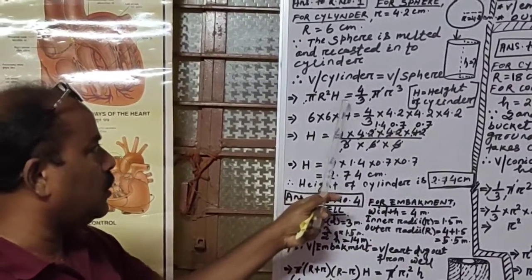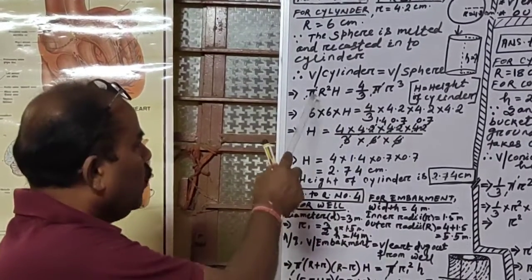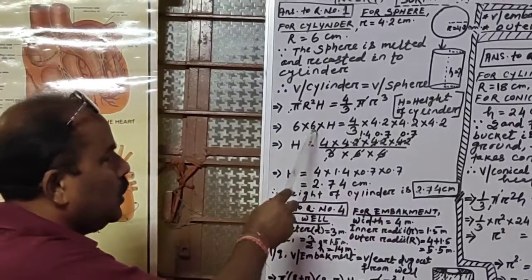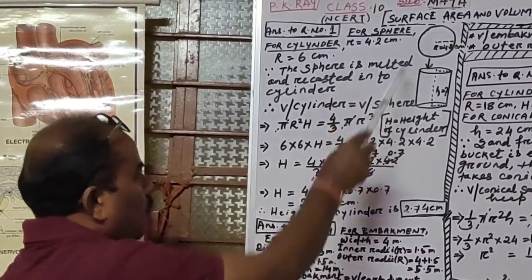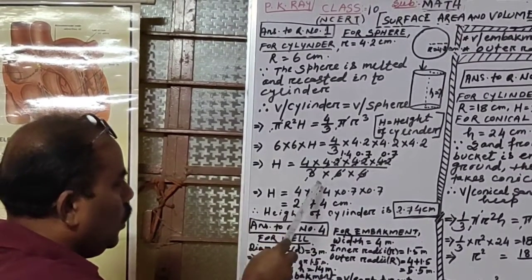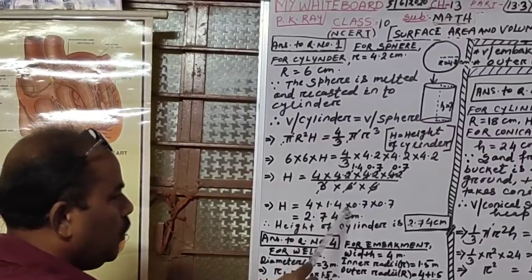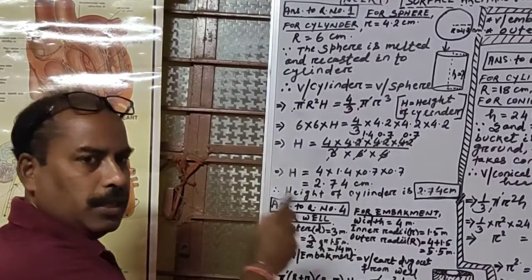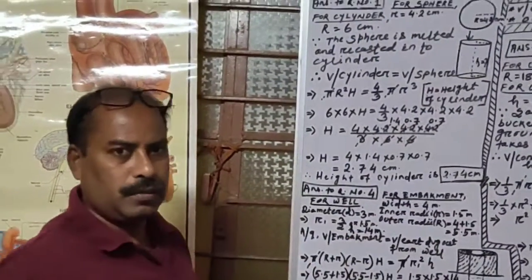We put in the formula: πR²h = 4/3 πr³. The π cancels from both sides. Then 6 × 6 × h = 4/3 × 4.2 × 4.2 × 4.2. Keeping h on the left, the other values divide to the right side. After solving, h = 4 × 1.4 × 0.7 × 0.7 = 2.74 cm. Therefore, the height of the recast cylinder is 2.74 centimeters. Question number 1 is complete.